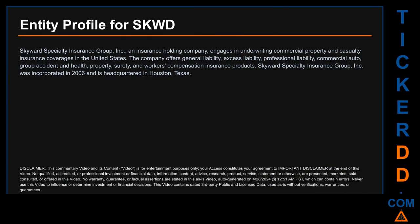Hello, my name is Carl. I searched the public web to find information about the company behind this ticker. Skyward Specialty Insurance Group Inc is an insurance holding company that engages in underwriting commercial property and casualty insurance coverages in the United States. The company offers general liability, excess liability, professional liability, commercial auto, group accident and health, property, surety, and workers compensation insurance products. Skyward Specialty Insurance Group Inc was incorporated in 2006 and is headquartered in Houston, Texas.